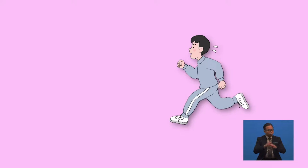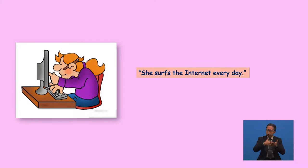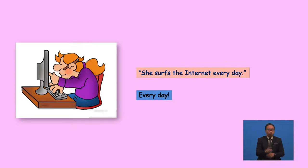Practice makes perfect. Let's do a simple exercise. Point to the verbs that use simple present tense. Look at the example: 'He always goes jogging in the morning.' Which one is the verb? Yes, the verb is 'goes'. Good job, everyone. Let's try one more: 'She surfs the internet every day.' What's the keyword? Yes, 'every day'. Which word is the verb? Yes, the word 'serves'.